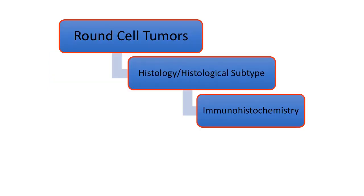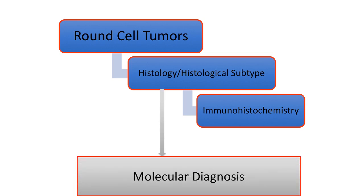How do we approach such a tumor in pathological diagnosis? There is histology and histological subtype which is aided by performing immunohistochemical stains, and in many cases we have to do molecular diagnosis to arrive at the right diagnosis.